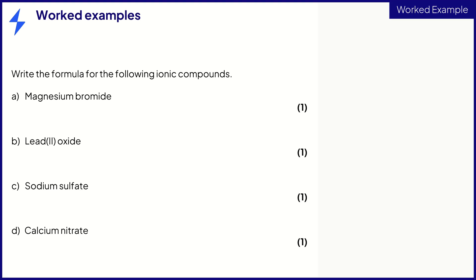In these worked examples, you are asked to find the formulae of the following ionic compounds. For magnesium bromide, write out the ions. Magnesium, being a group 2 element, has a charge of 2 plus and bromide has a charge of 1 minus as it is a group 7 element.